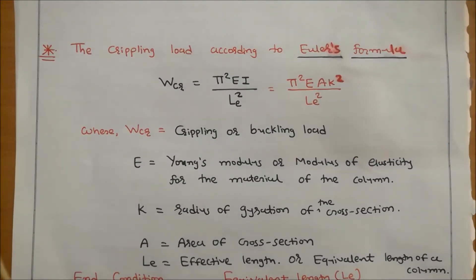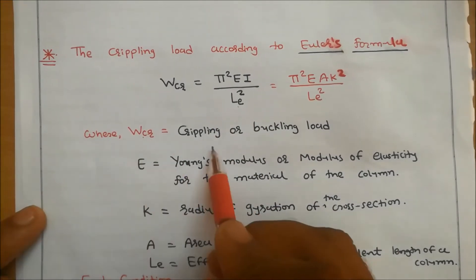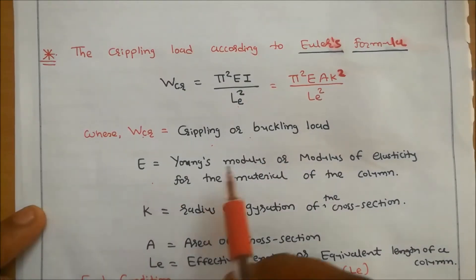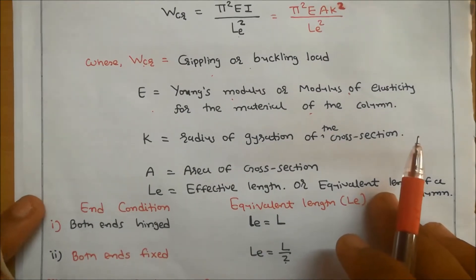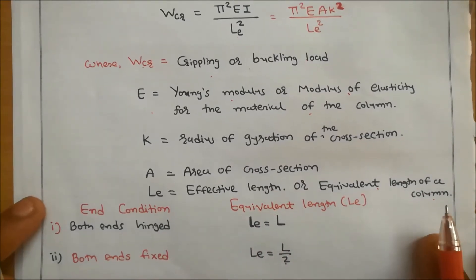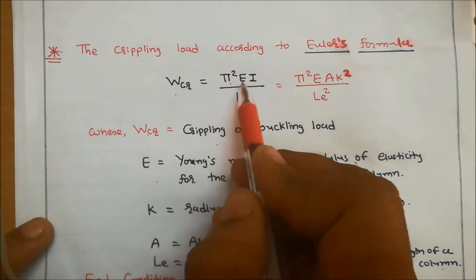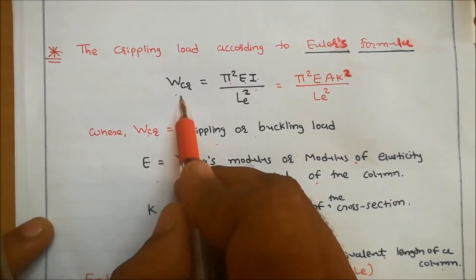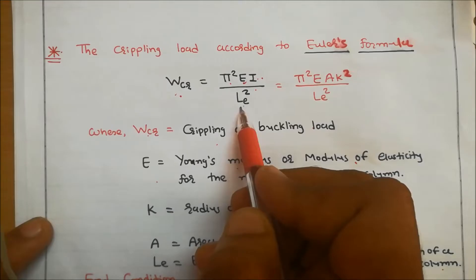The first equation is the crippling load according to Euler's formula: WCR = π²EI / Le², where WCR means crippling or buckling load, E means Young's modulus or modulus of elasticity, I means moment of inertia, and Le means effective or equivalent length of the column.